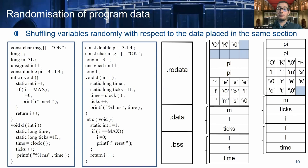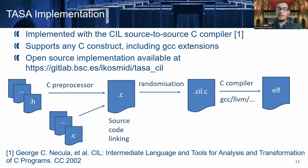TASA is implemented within the SIL source-to-source compiler, which supports any C constructs including C extensions. It is available as open source from the BSC GitLab. All files are first preprocessed with the C preprocessor and then linked together into a large C file. This file is then randomized and generates another C file, which can be compiled with any C compiler like GCC, LLVM, or a custom compiler, in order to generate an ELF binary.